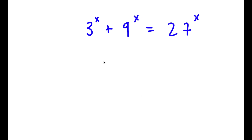We have 3 to the power of x plus 9 to the power of x is equal to 27 to the power of x. To solve this, I'm going to first rewrite 9 as 3 to the power of 2.